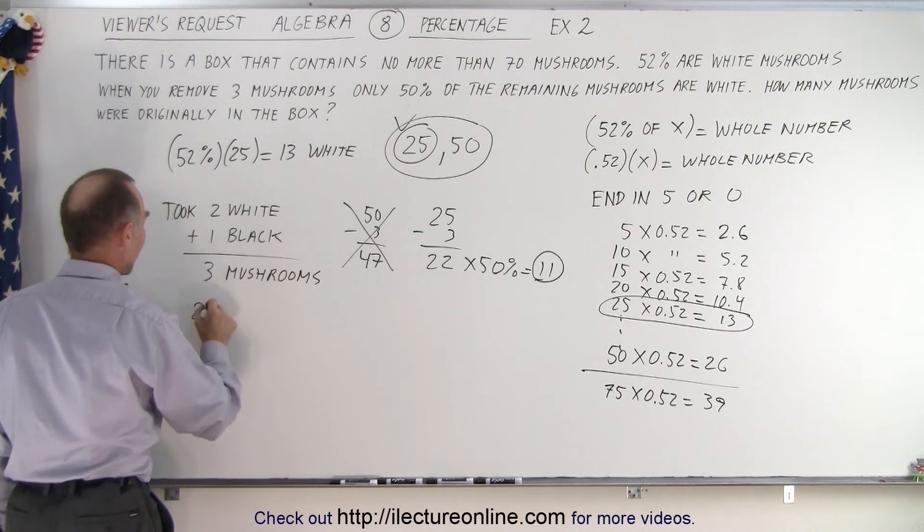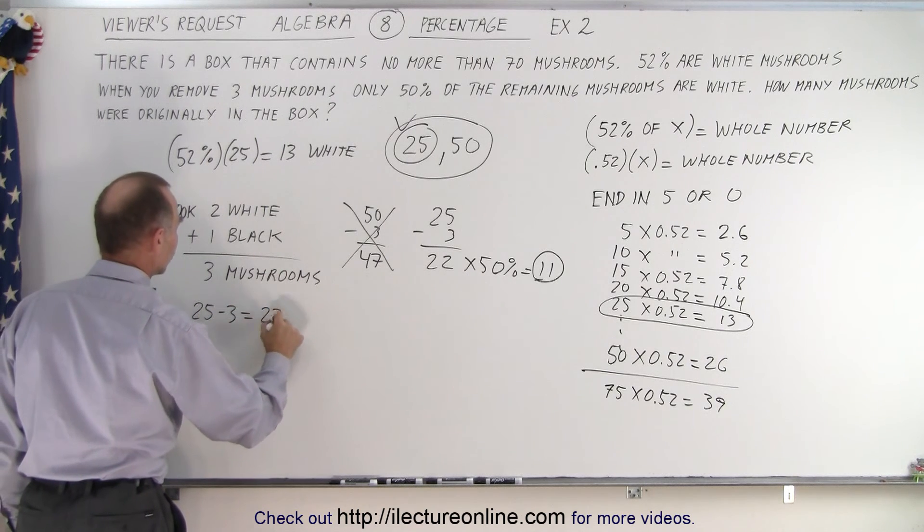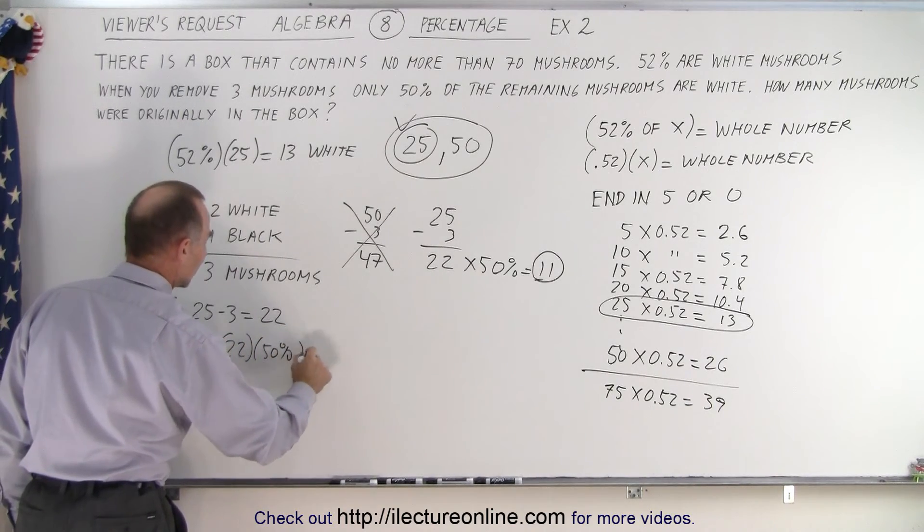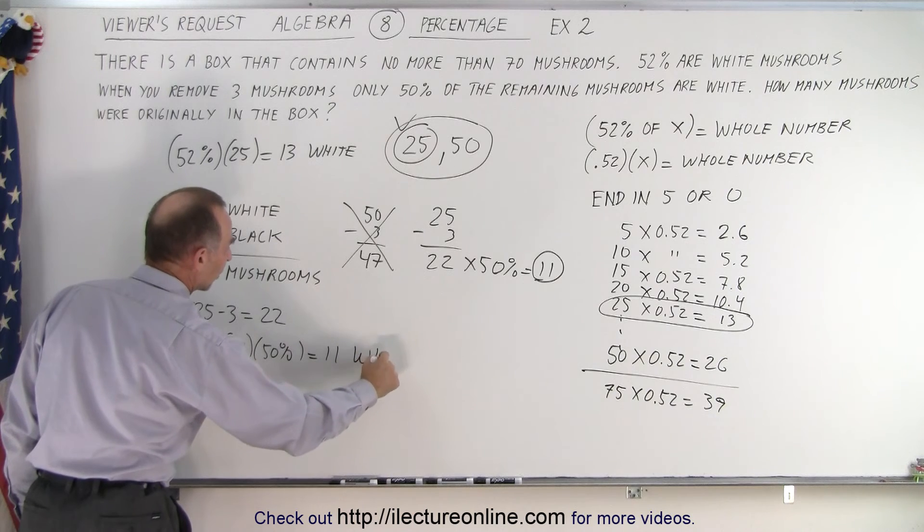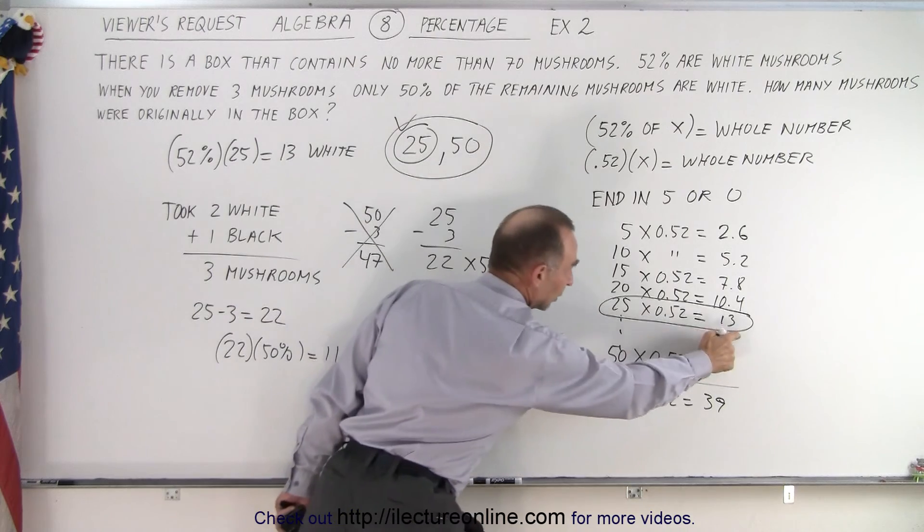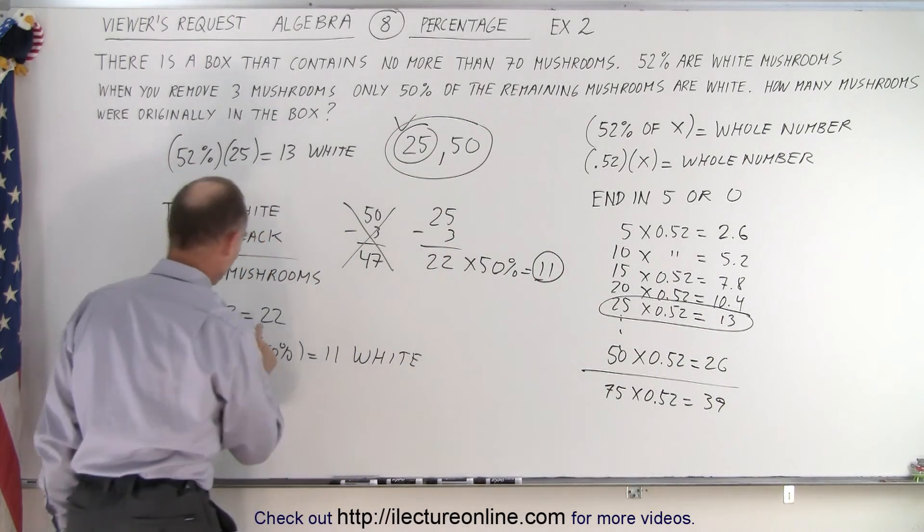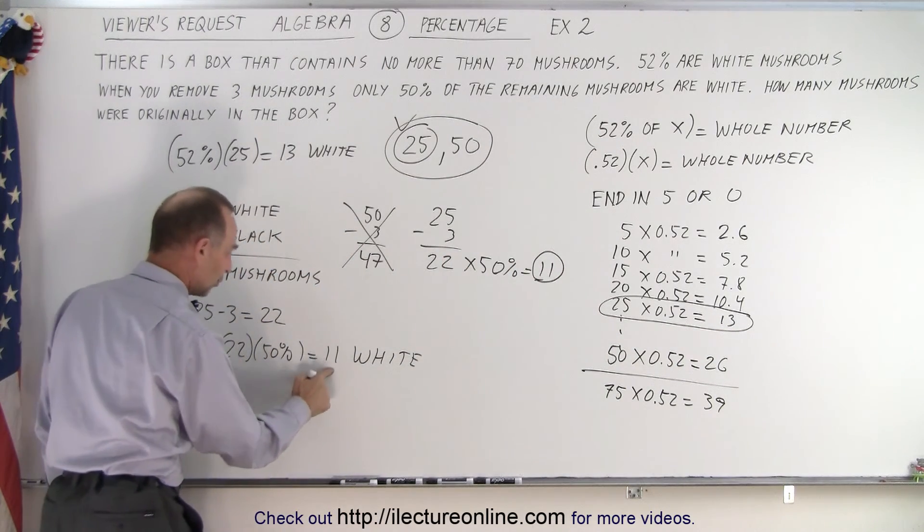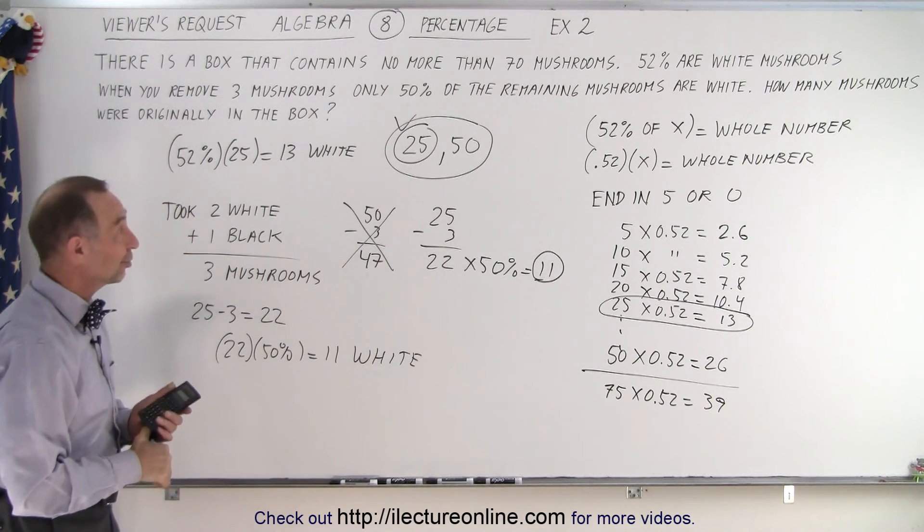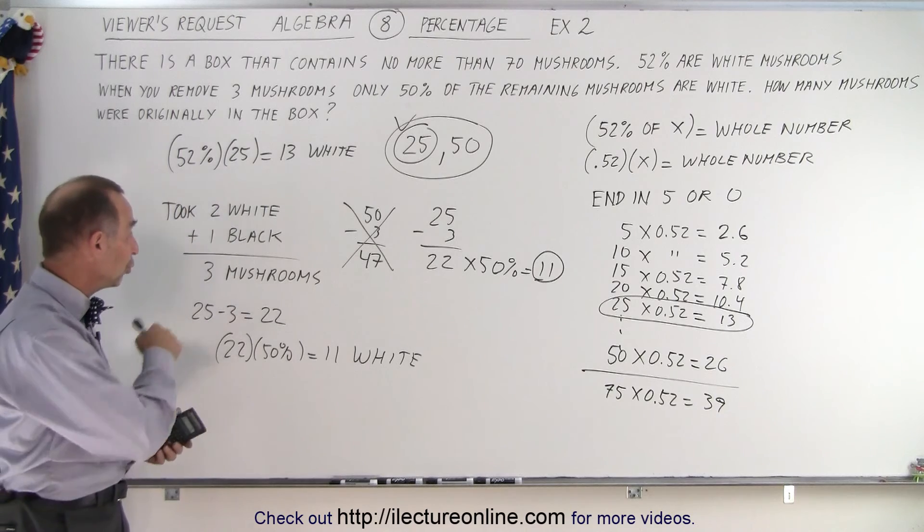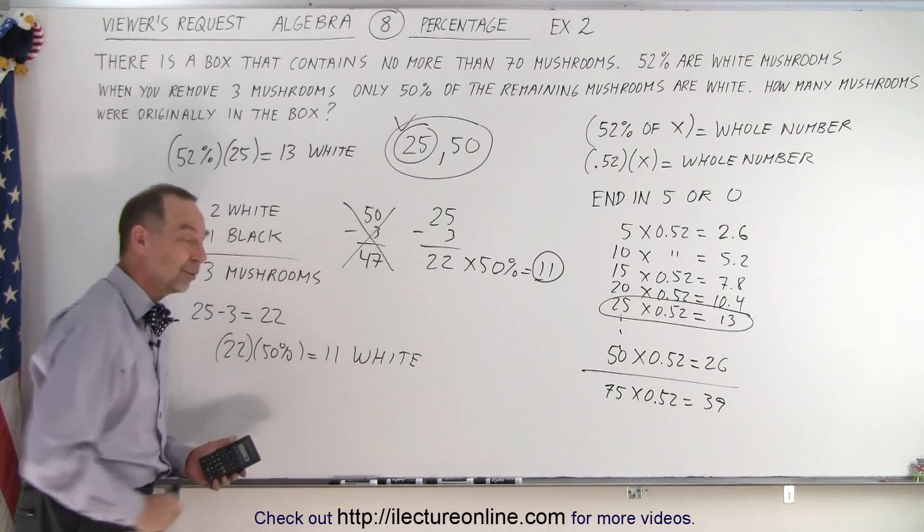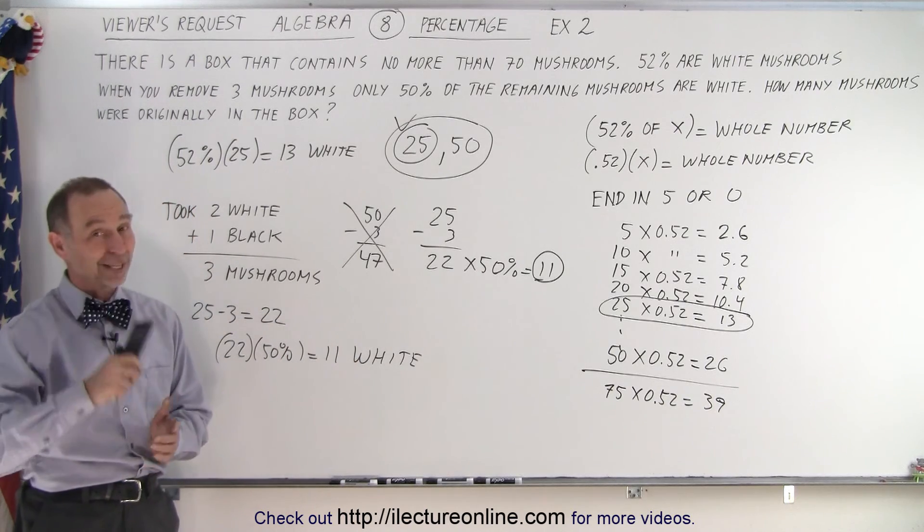Which means that 25 minus 3 gives me 22, and then 22 multiplied times 50% gave me indeed 11 white mushrooms, because I started with 13 white mushrooms, I took two white mushrooms away, that gave me 11 white mushrooms. I took one black mushroom away, and so that seems to work. We started with 25 mushrooms, we took two white and one black mushroom out, we ended up with 22 mushrooms, and 50% of those were still white mushrooms. And that is how it's done.